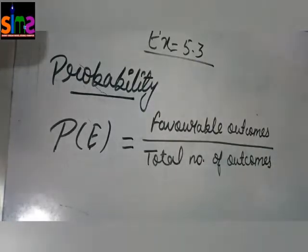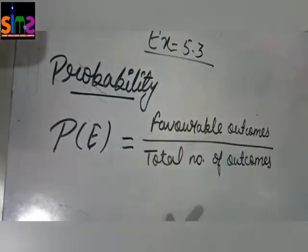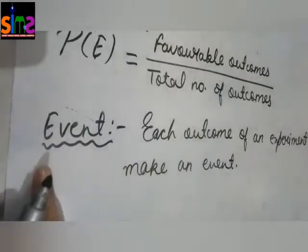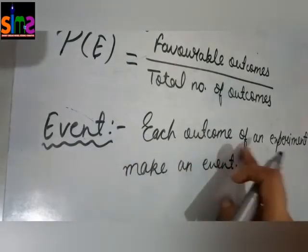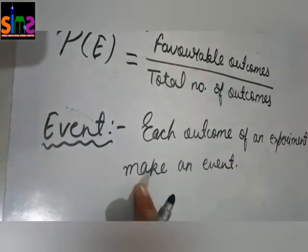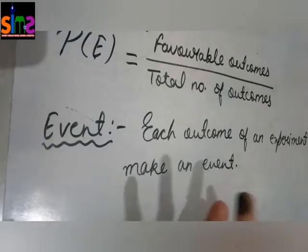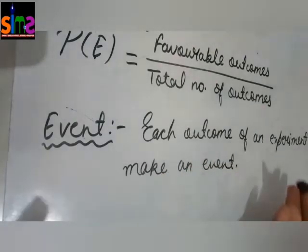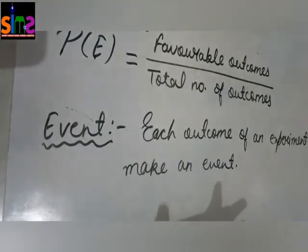You must be thinking: what is an event? So, in probability, I am going to explain to you what events are. Here is the definition of event: each outcome of an experiment makes an event. You must be thinking, what does that mean? So let me tell you, Bacho.